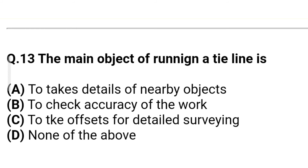Question 11: The main object of running a tie line is — Option A: to take details of nearby objects. Option B: to check accuracy of the work. Option C: to take offsets for detail surveying. Option D: none of the above. The correct answer is Option A — to take details of nearby objects.